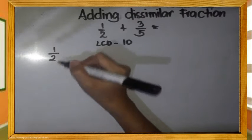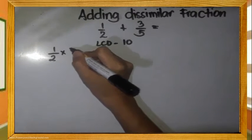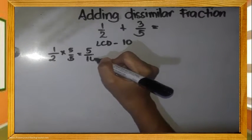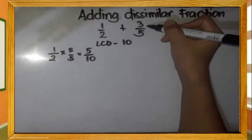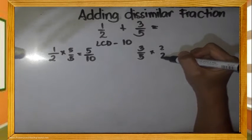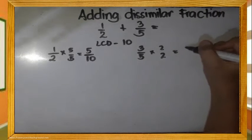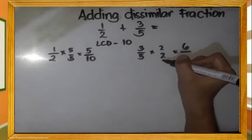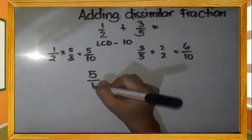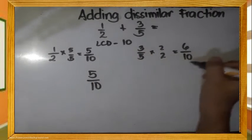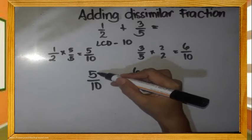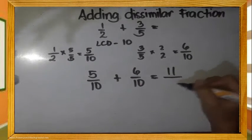For 1 half, multiply the numerator and denominator by 5, so it becomes 5 tenths. For 3 fifths, multiply by 2 — so 3 times 2 is 6, and the denominator 5 times 2 equals 10. Now we have 5 tenths plus 6 tenths, which equals 5 plus 6, giving us 11 tenths.